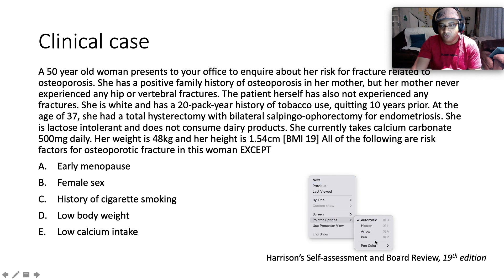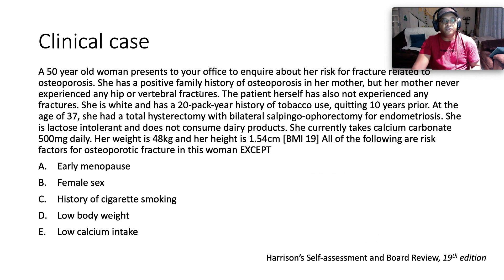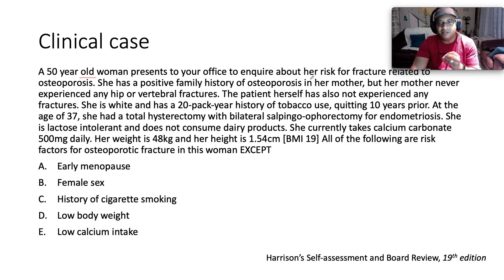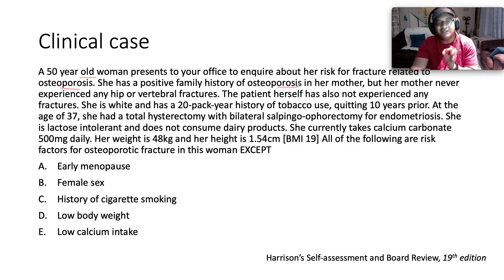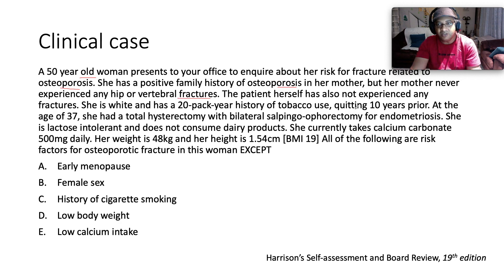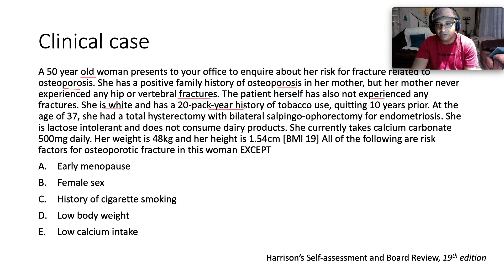Today we have a 50-year-old woman who presents to your office to inquire about her risk for fracture related to osteoporosis. She has a positive family history of osteoporosis in her mother, but her mother never experienced any hip or vertebral fractures. The patient herself has also not experienced any fractures. She is white and has a 20 pack-year history of tobacco use.